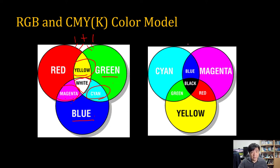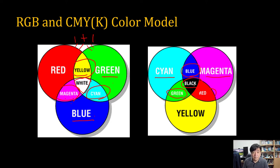In printing we use the opposite colors: magenta, cyan, and yellow. If we mix cyan ink with magenta ink, the color becomes blue. If we mix cyan and yellow, we get green. If yellow and magenta are added, we get red. If all three colors are added, we get black. That is the CMY model. Sometimes we call it the CMYK model because in printing, black is the most widely used color, so black ink is especially added to express brightness.